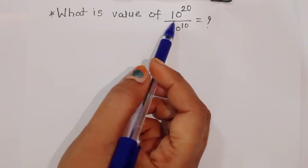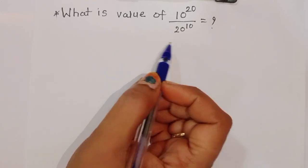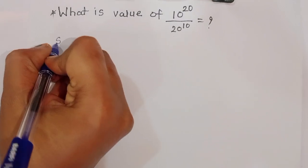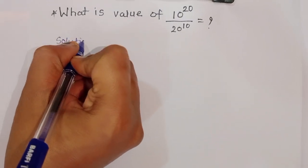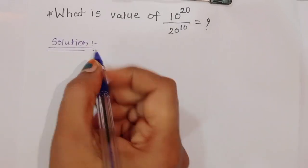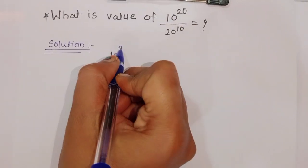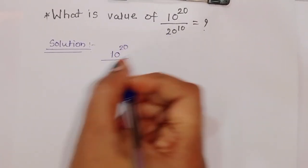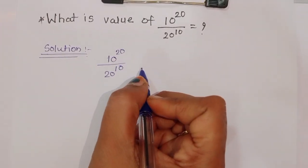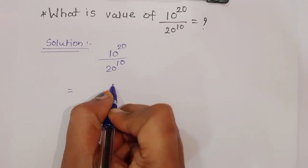The question is: what is the value of 10 raised to 20 divided by 20 raised to 10? Let's see the solution. We start from 10 raised to 20 divided by 20 raised to 10.